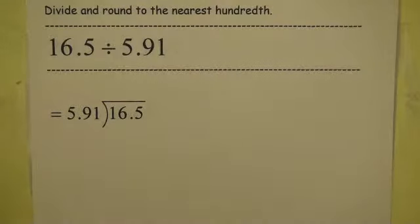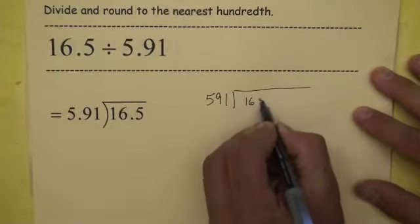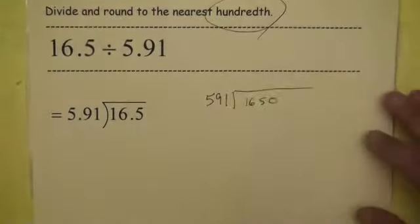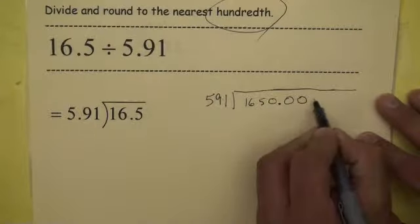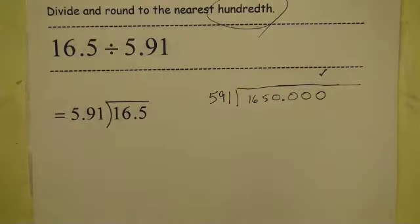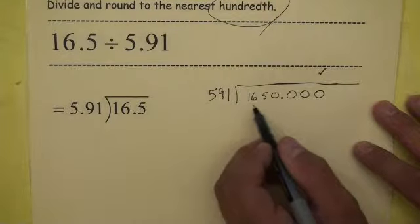Let's take a look at another example. We have 16 and a half divided by 5 and 91 one-hundredths. Well, in this case, because of the pattern we just observed in the last problem, we would change this to 591 divided by 1650. Because we would move the decimal over two places for each number, essentially multiplying both the numerator and denominator by 100. Now, they want us to round to the nearest hundredth, which means we are going to need a couple of places past the decimal. In fact, we should probably use this third zero, because we're going to need the number that's in this digit place, the one-thousandth place, to help us round to the nearest hundredth. So we're going to go through here and go ahead and divide 591 into 1650.